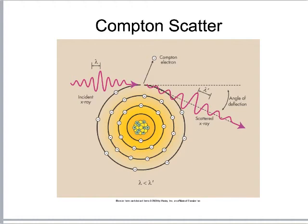Compton scatter is a major concern. The incoming photon ionizes an atom inside the patient's body, producing a Compton or recoil electron, and then exits at an angle with reduced energy. Compton scatter is bad because it ionizes tissue and the only thing it contributes to our image is noise — it has no diagnostic value in terms of showing tissue detail.